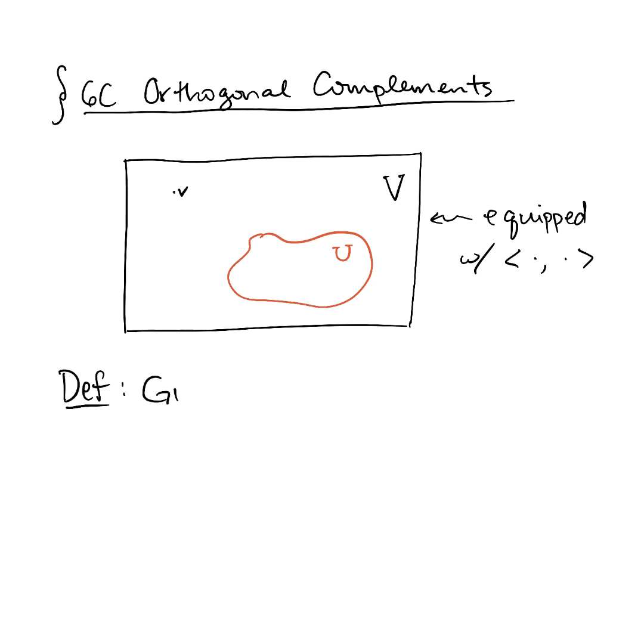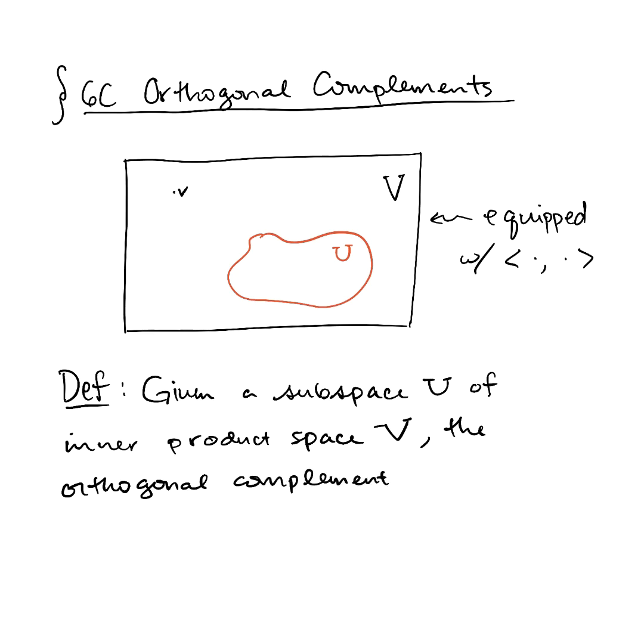Definition. Given a subspace U of inner product space V, the orthogonal complement. Now this is complement as in set complement, not complement as in, hey nice subspace. So that's with E after the L, not I.